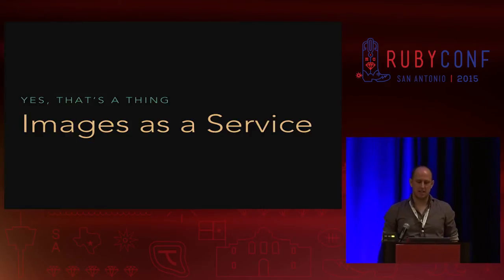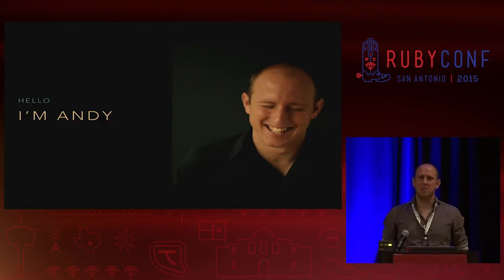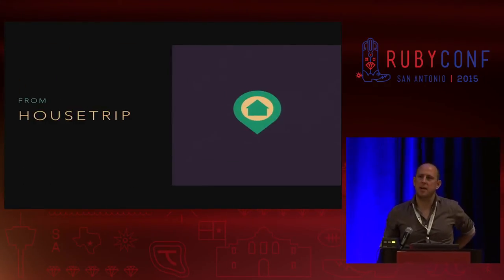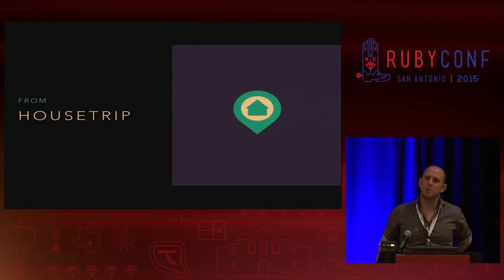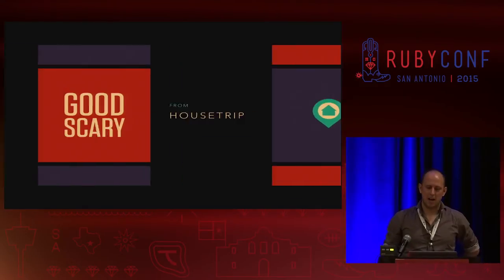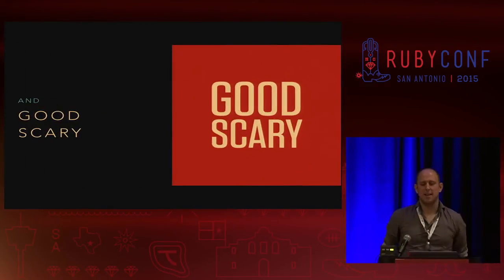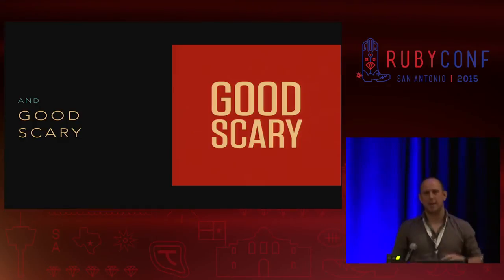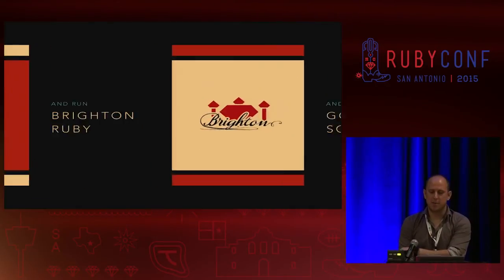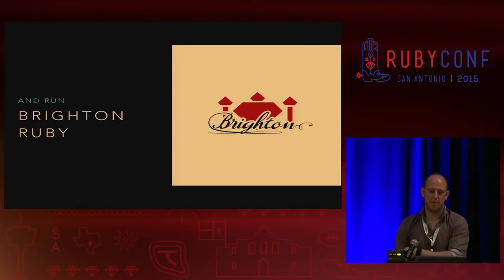I'm going to talk to you today about images as a service. My name is Andy. I'm from the XF and from the UK. I work at a company called HouseTrip, which is a bit like Airbnb, except we have a very enormous amount of money. It's more for families — more villa holidays. I also run a very small consultancy where we do some Rails maintenance. I also run a little conference called Brighton Ruby on the south coast of the UK. I'm running it on the 8th of July, if any of you fancy a trip.